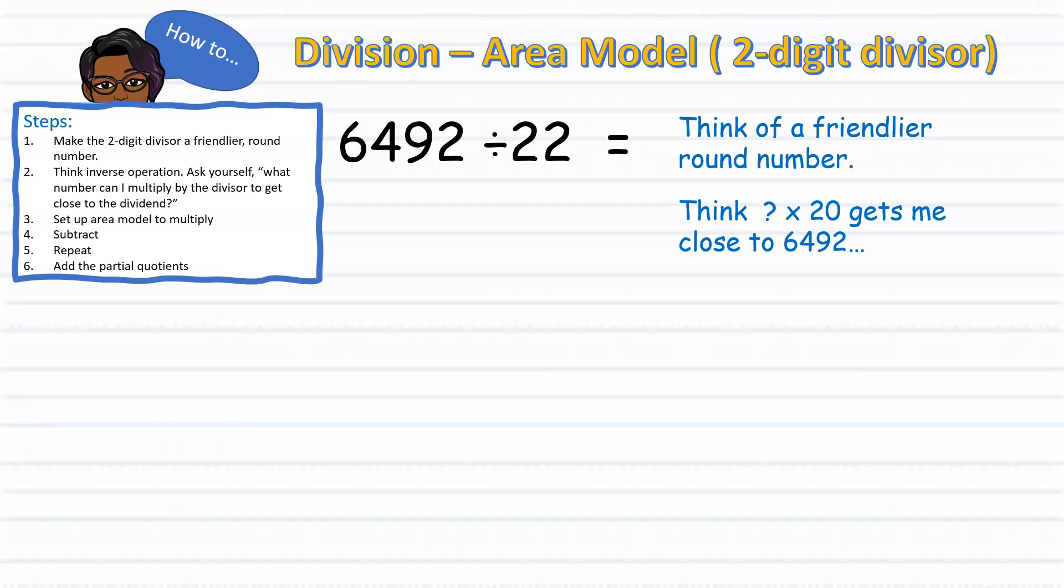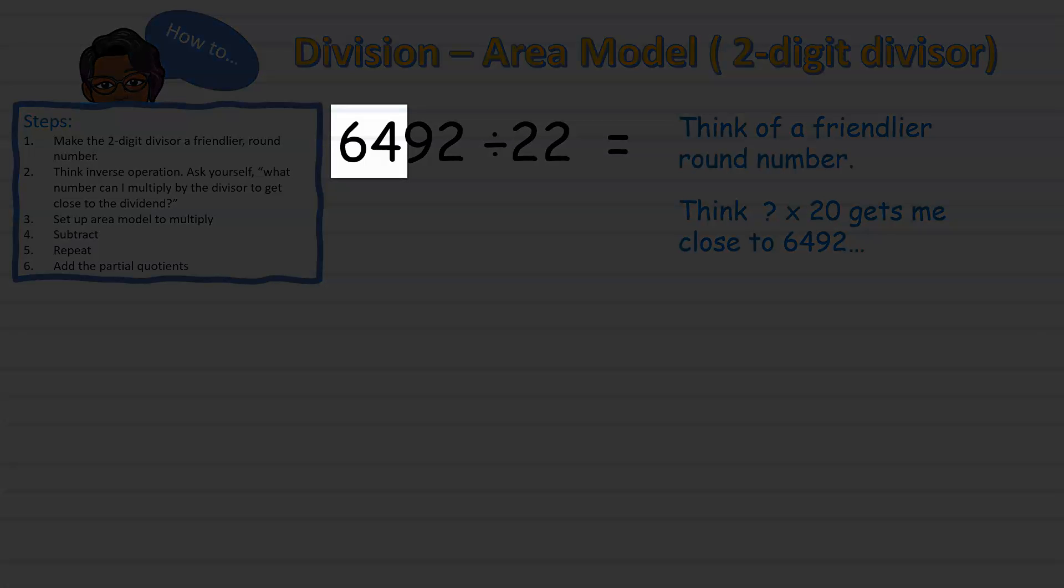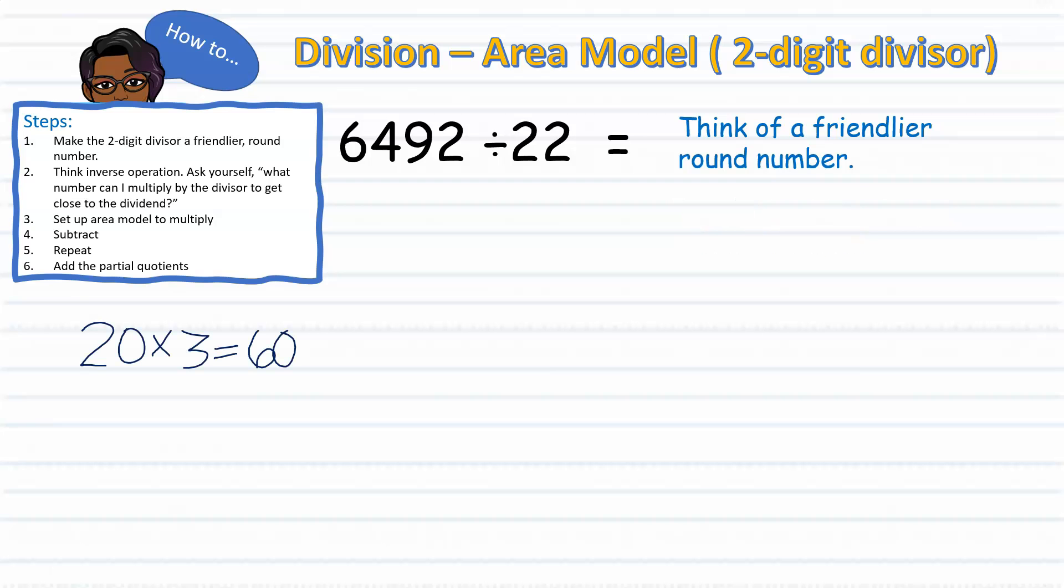what number times 20 gets me close to 6,492? For easier mental math calculation, instead of looking at the entire 6,492, simply isolate or think in terms of 64. And think, what number times 20 can get me close to 64? Since I know that 20 times 3 equals 60, I can try 22 times 3 and see if that would bring me close to 64. After trying 22 times 3, I recognize that I go over 64. So therefore, I cannot multiply by 3. Instead,